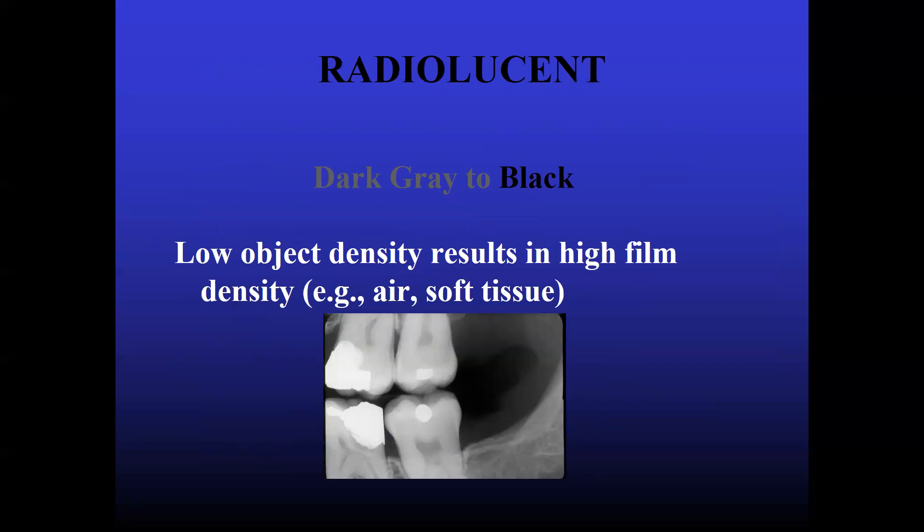So what is radiolucent? Dark gray to black. Low object density results in high film density. That is, object density like air, soft tissue etc. are very less dense. So in the film it will appear more dark. That is, in this radiograph you can see the darker area which is air. The next grayish area is the soft tissue actually. The bone is, you can say, as a much more denser radiopaque area.